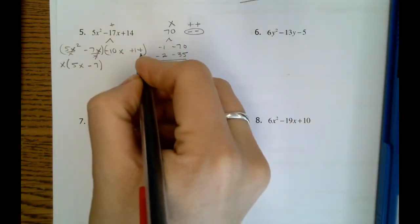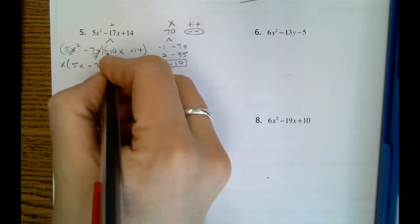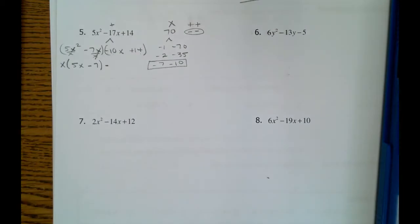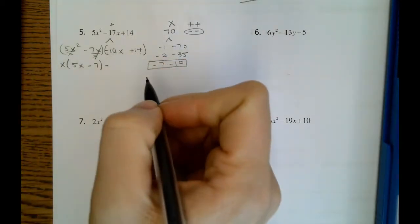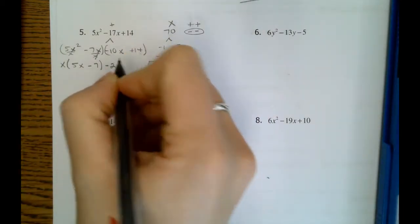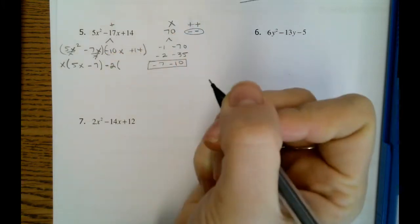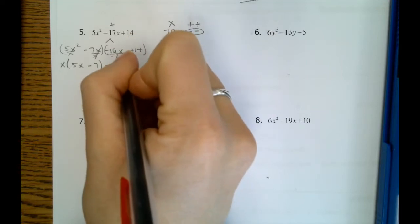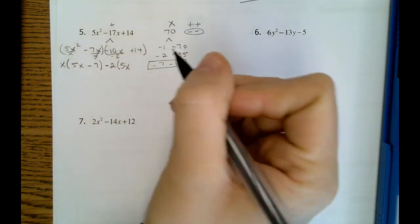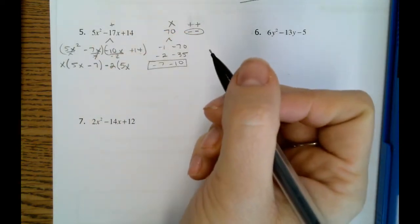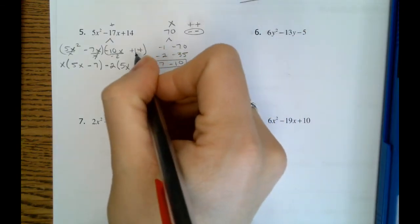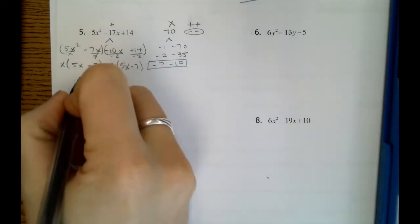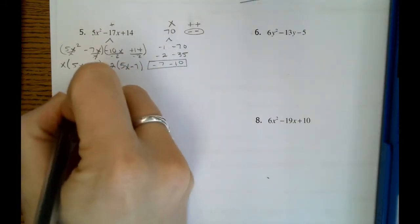Negative 10x and 14. Since there's a negative that's leading here, we're definitely going to be factoring out a negative number. 10 and 14 have the biggest GCF of 2. Negative 10x divided by negative 2 is 5x. And 14 divided by negative 2 is negative 7. So our parentheses are the same, so we're good to go.